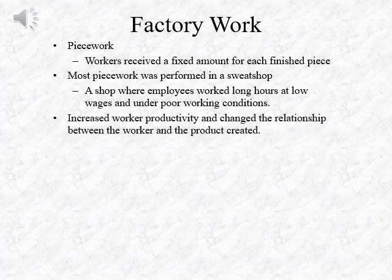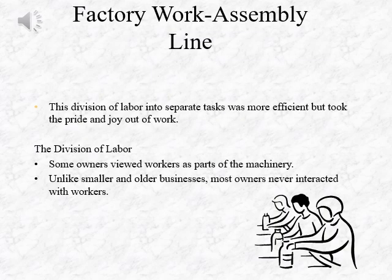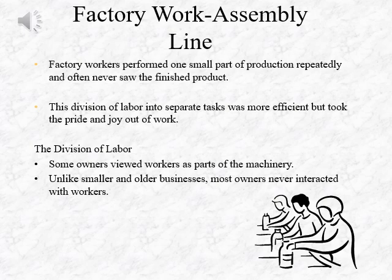This increased worker productivity but changed the relationship between the worker and the product created. Factory workers performed one small part of production repeatedly and often never saw the finished product. This division of labor was much more efficient, but took the pride and joy out of work. Some owners viewed their workers as parts of the machinery itself. Unlike smaller, older businesses where owners interacted with employees, in factories most owners never interacted with workers.